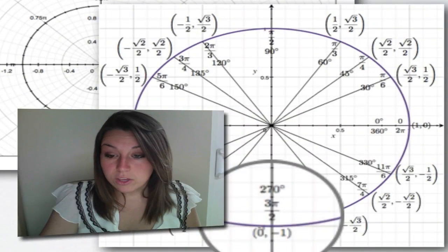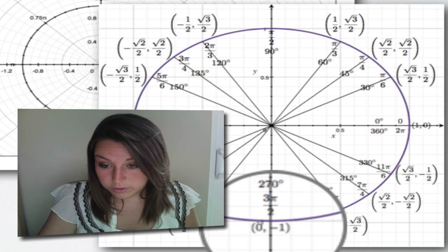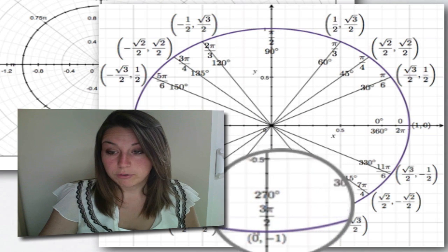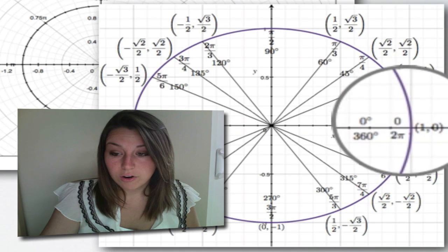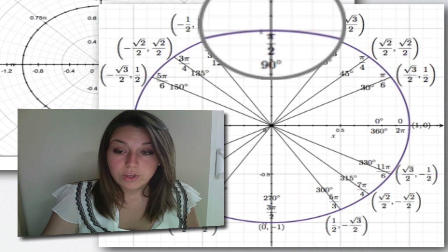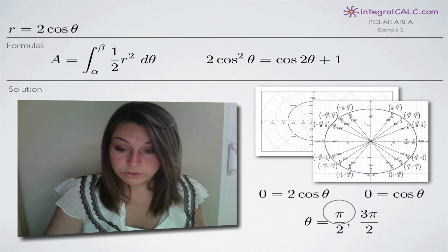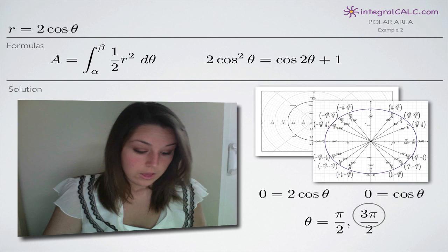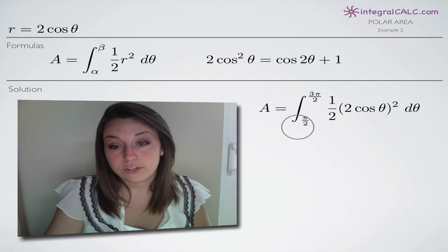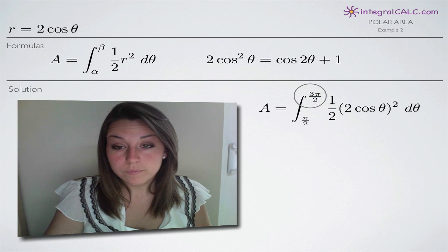Looking at the y-axis, we have two points on the unit circle where x equals zero: pi over two and three pi over two. Remember, on the unit circle you always start at the point (1, 0), the angle zero, and move counter-clockwise. So we hit pi over two first, continue moving, and then hit three pi over two. That means our two solutions in order are pi over two, then three pi over two.